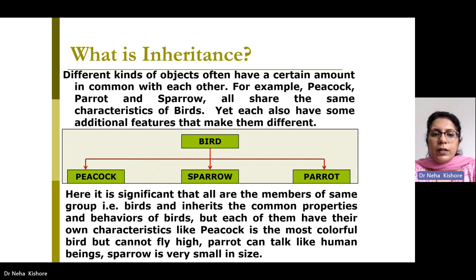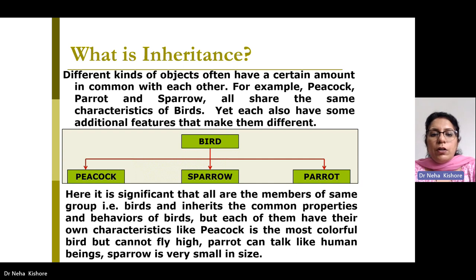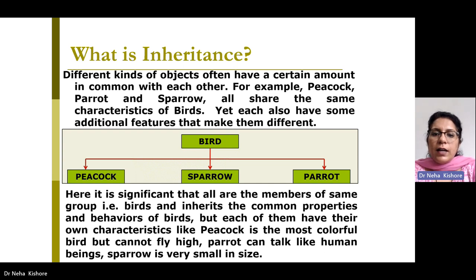In a tree format, they are all birds, and we have Peacock, Sparrow, and Parrot. It is significant that all members of the same group — birds — have common properties and behavior. But each of them has their own characteristics: Peacock is the most colorful bird but cannot fly high, Parrot can talk like a human being, and Sparrow is very small in size. They all are birds, but they have some common properties and some different properties which make them different from each other.